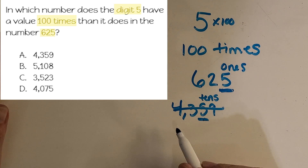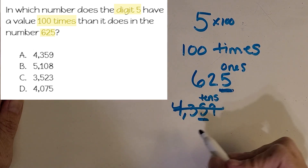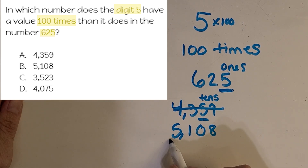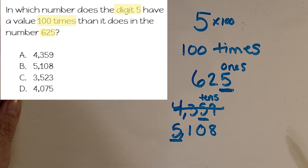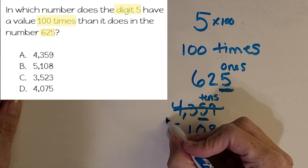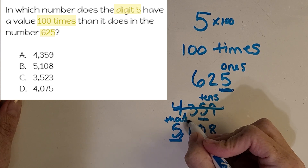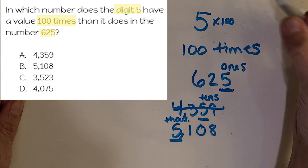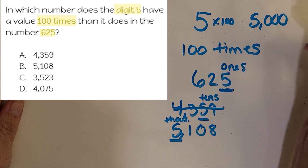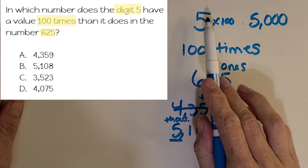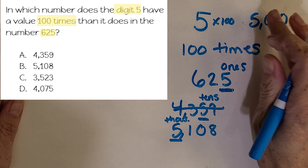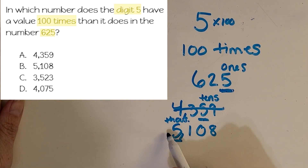Let's look at the next one. B is 5,108. Let's underline that 5 and study it. What place is that in? You're right — the thousands. And how much is 5 in the thousands worth? 5,000. So is 5,000 a good amount — is that 100 times the digit in 625? No, that is too big. So let's not pick B.